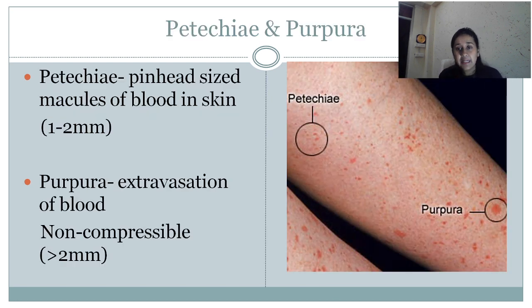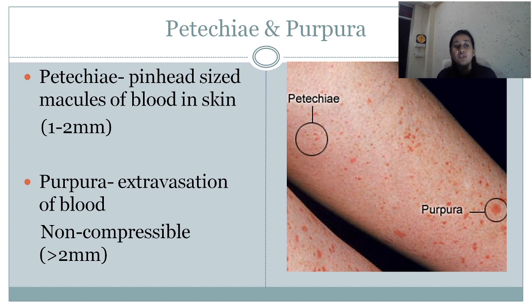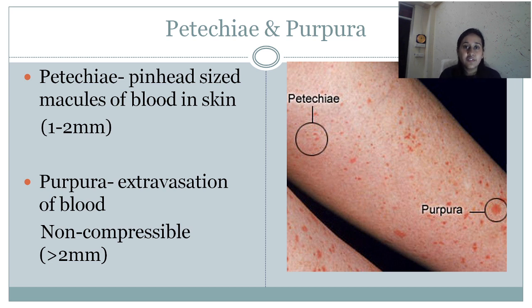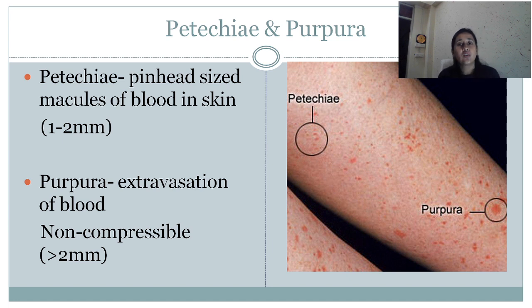Next is petechiae and purpura. Both are similar — the only difference is the size. In petechiae, the size is 1 to 2 mm. While in purpura, the size is more than 2 mm. Purpura can be palpable also, and this is a characteristic clinical feature of small vessel vasculitis, also called leukocytoclastic vasculitis.